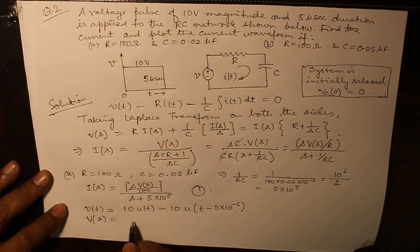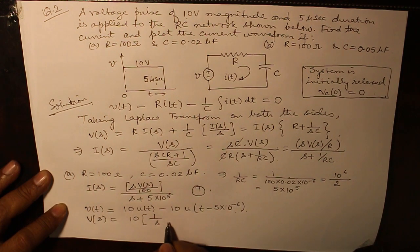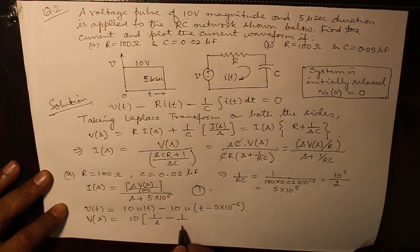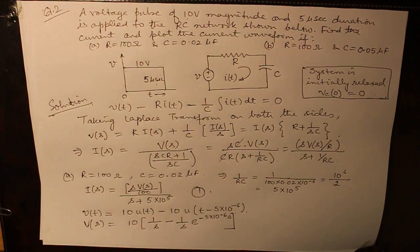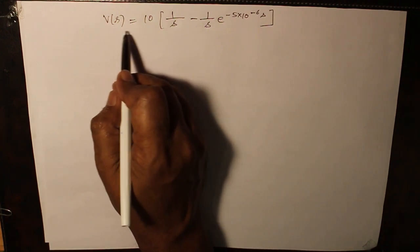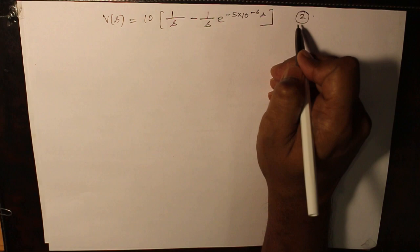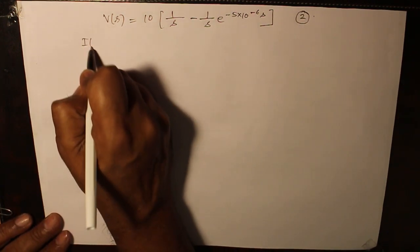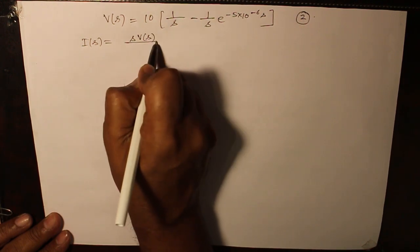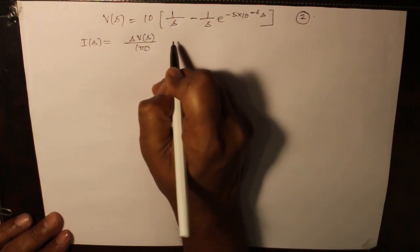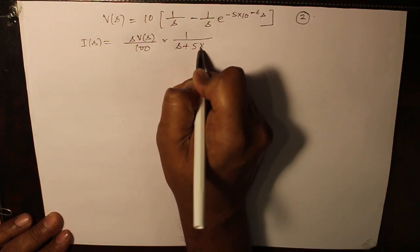So, V(s) equals 10 we can take out common: 1 over s minus 1 over s times e raised to the power of minus 5*10^-6*s. Once we have the value of V(s), name it as equation 2. Substitute this value of 2 in original equation of I(s), which was s*V(s) over 100. And in the denominator, we had s plus 5 times 10 raised to the power of 5.